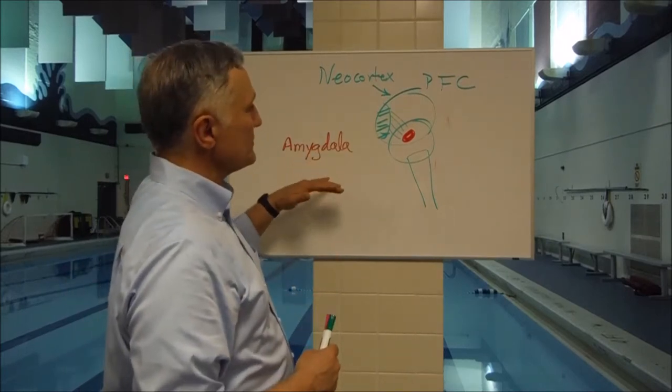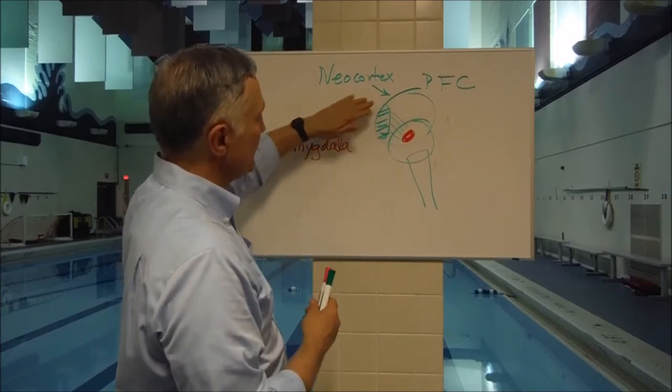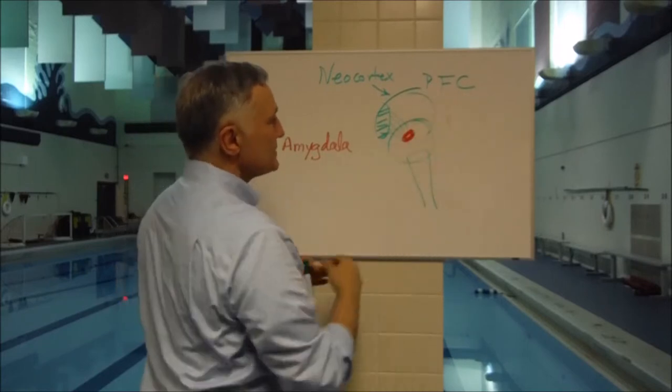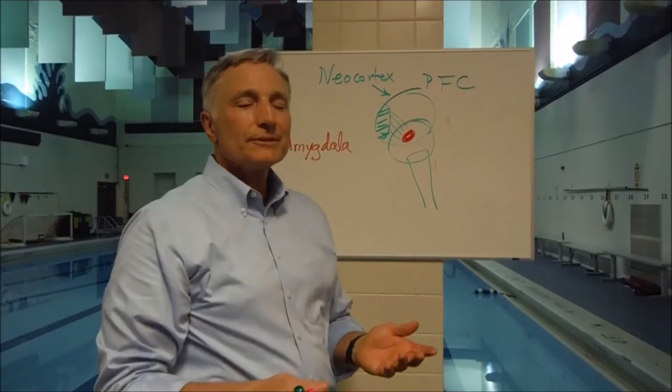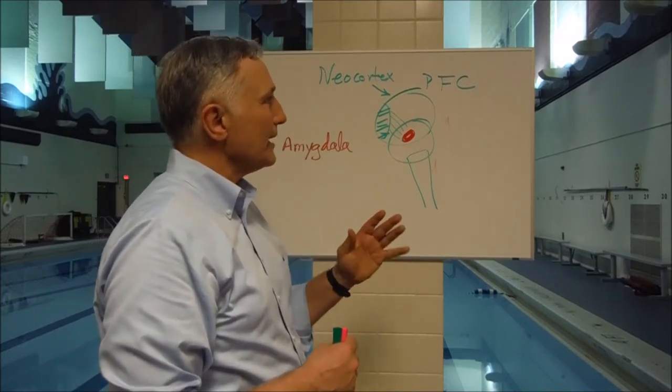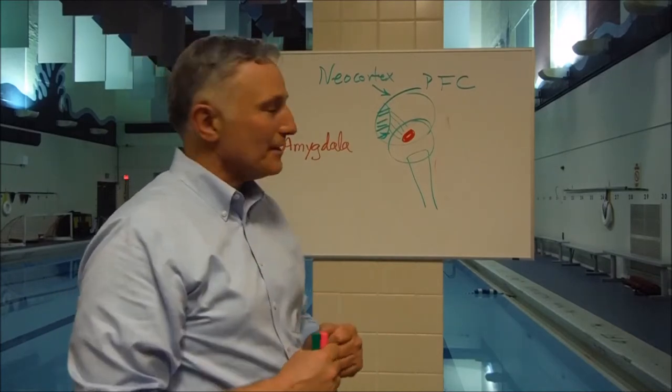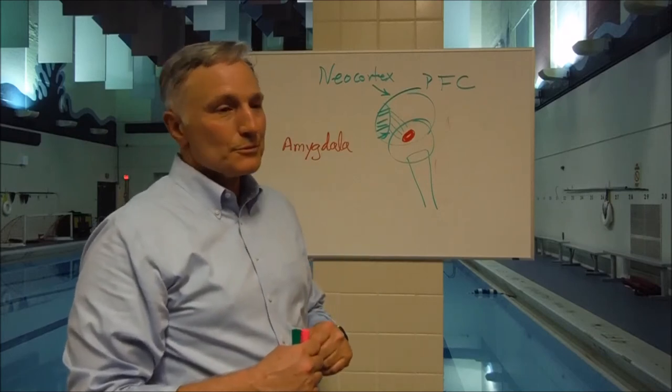And the most important of those, for our purposes, are the prefrontal cortex, which is this area here, and the amygdala. So basically the PFC is the part of your body which would tell you to calm down. It's sort of the executive in control of all of your complex behavior, whereas the amygdala is sort of the center of the fight or flight response.